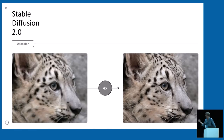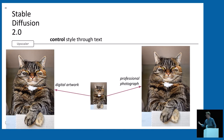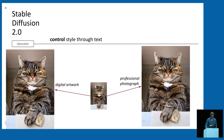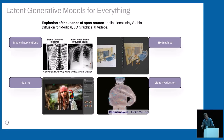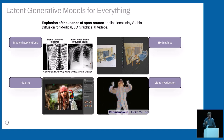Another application is super resolution: instead of providing a mask or a depth map, we provide a low-resolution image and upscale it, which is also a generative process because detail needs to be generated. Again, this can be controlled through natural language — while upscaling, we can change the style to a professional photograph or a digital artwork. Now, especially with the open source release of that model, these latent generative models are basically everywhere.